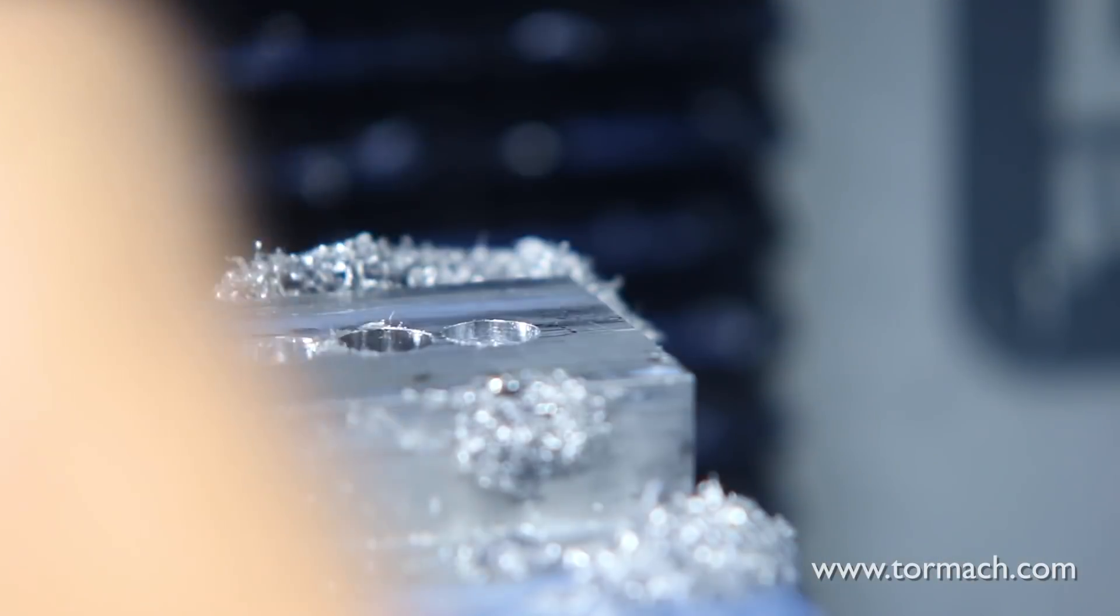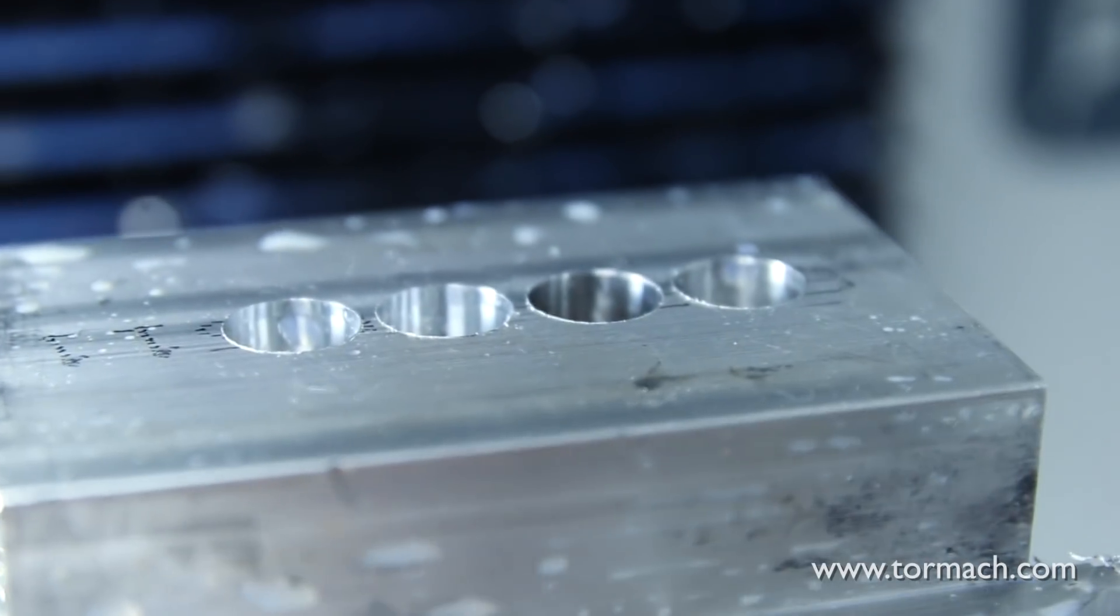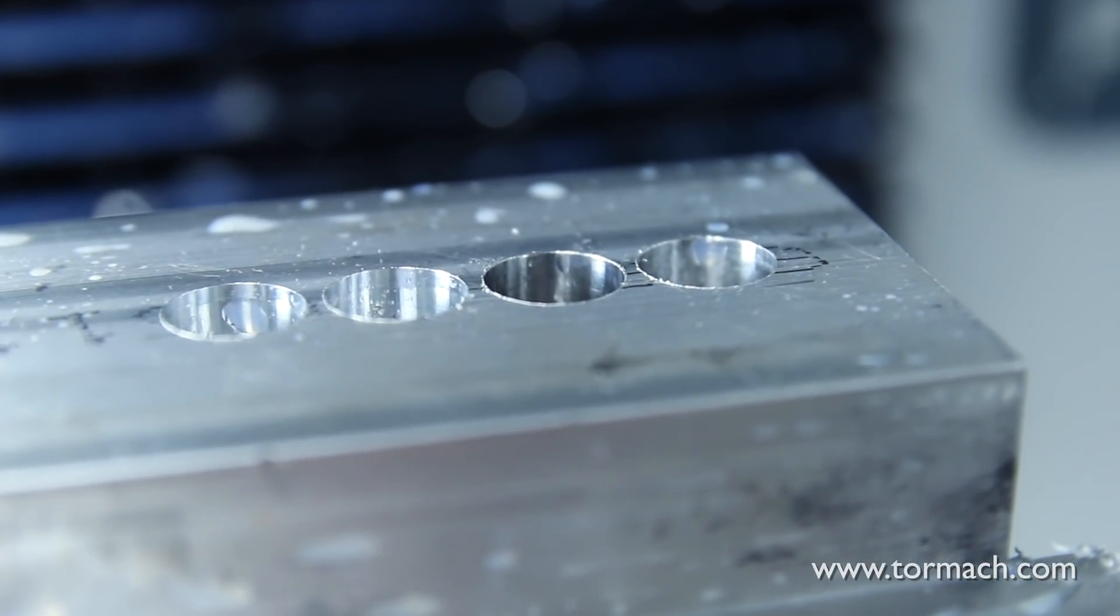We'll just wipe the part off quick, and you can see that we have two more holes in our blank here. What we've covered so far is how to make a hole with a pocketing routine and one with a thread milling routine.